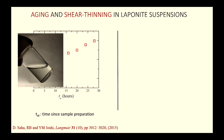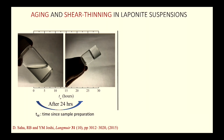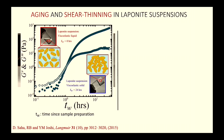When freshly prepared, a clay suspension looks liquid — about 10 times more viscous than water. After sealing it and returning 24 hours later, it has become a soft glassy solid. This is a spontaneous viscoelastic liquid to viscoelastic solid transition driven by the evolution of microstructures.